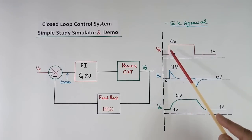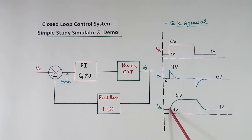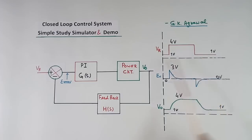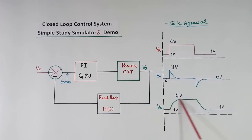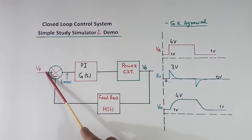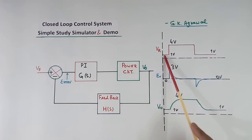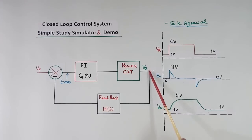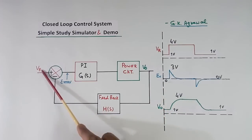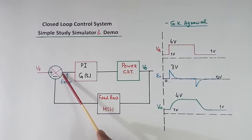Here I have shown three wave shapes. This point is shown here, this error signal point is shown here, and output is shown here. Now in the beginning, suppose this point is 1 volt and output also is 1 volt — so this is also 1 volt, this also 1 volt, error is 0.